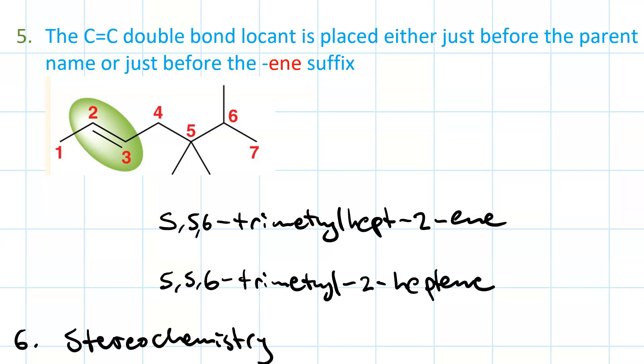And then step six is to classify the stereochemistry, right? Either E or Z. In this case, my two important groups are pointing in opposite directions. So this one is E. So we put that in front: (E)-5,5,6-trimethylhept-2-ene or (E)-5,5,6-trimethyl-2-heptene.